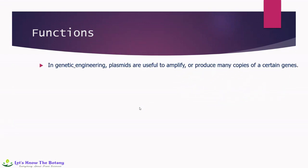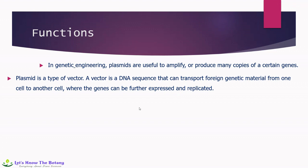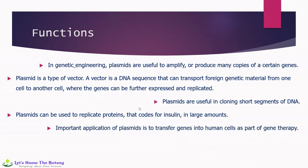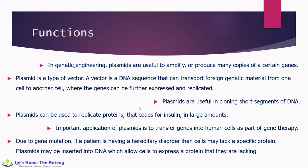As far as the functions of plasmids are concerned, plasmids are very important in genetic engineering for amplification or production of many copies of a certain gene of interest, and are helpful for making recombinant DNA technology. A plasmid is a type of vector — a DNA sequence that can transport foreign genetic material from one cell to another where the genes can be further expressed and replicated. Plasmids are also useful in cloning short segments of DNA that can be used to replicate proteins coding for insulin in large amounts — important for diabetes treatment. An important application of plasmids is gene therapy: if a patient has a hereditary disorder due to gene mutation, cells may lack a specific protein, and plasmids inserted into DNA allow cells to express the protein they are lacking.